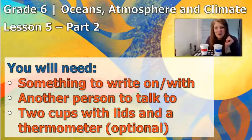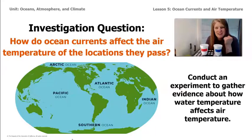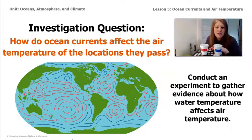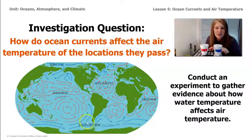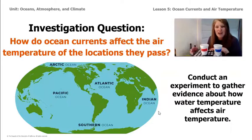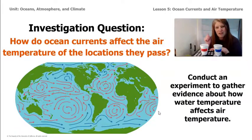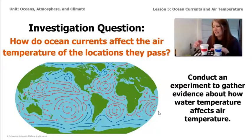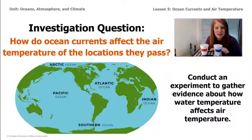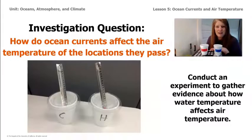Let's get into our experiment. The investigation question that we're trying to answer here is: how do ocean currents affect the air temperature of the locations they pass? If you look at our picture, we can see that those gyres that form in the ocean — some of them are carrying warm water and some are carrying cold water. And how does that affect the temperature of the air above it? We're going to conduct an experiment to try to discover that.